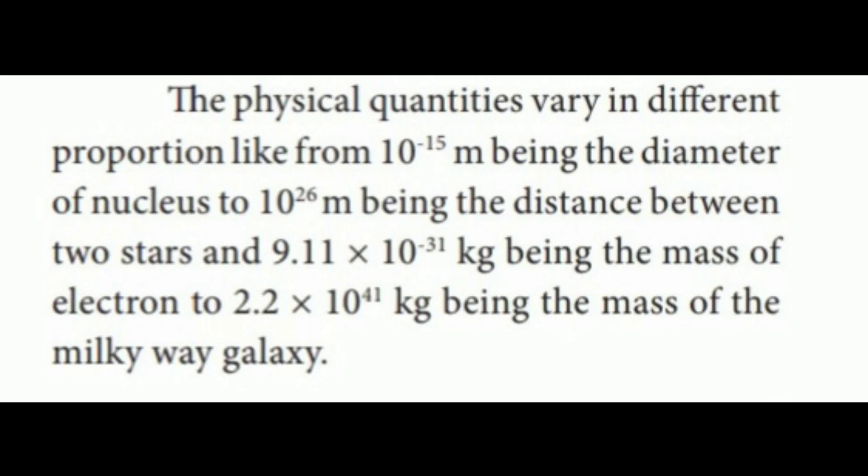The physical quantities vary in different proportions like from 10^-15 m being the diameter of nucleus to 10^26 m being the distance between two stars, and 9.11 × 10^-31 kg being the mass of electron to 2.2 × 10^41 kg being the mass of the Milky Way galaxy. Thank you.